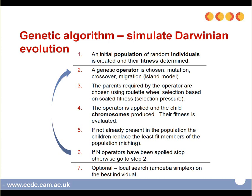Then the operator is applied and the child chromosomes are produced. The fitness of these child chromosomes is evaluated. Then, if not already present in the population, these children replace the least fit members of the population — this is termed niching. If n operators have been applied, you stop; otherwise you go back to step 2 and repeat the process.